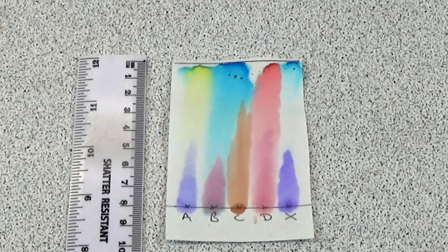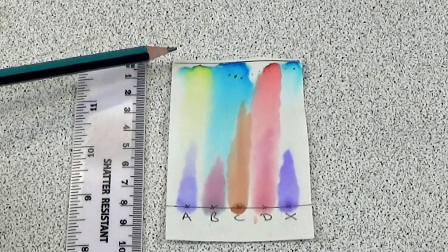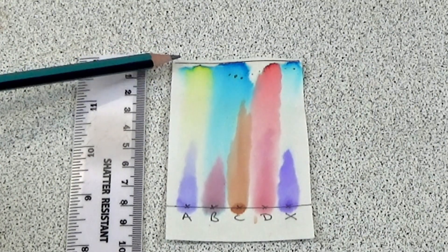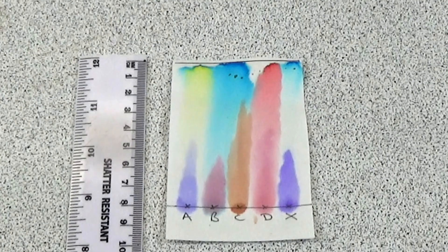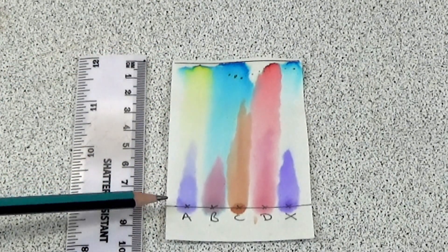The students then take the chromatography paper out of the water and mark on it a line where the solvent, in this case the water, reached to. They then measure the distance between the two lines and that is the distance that the solvent has travelled.